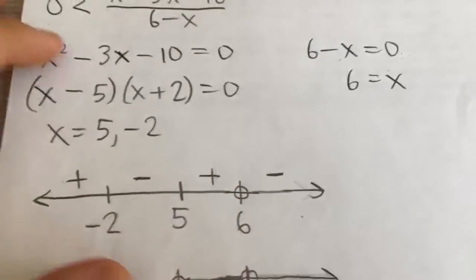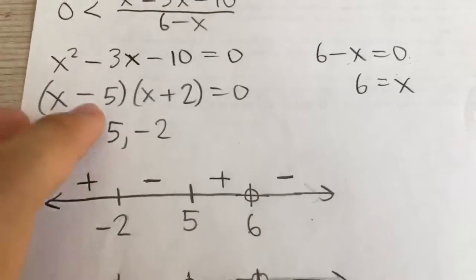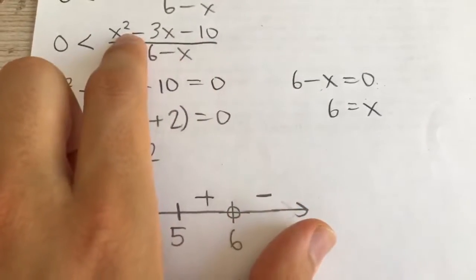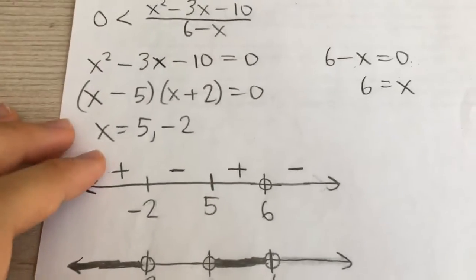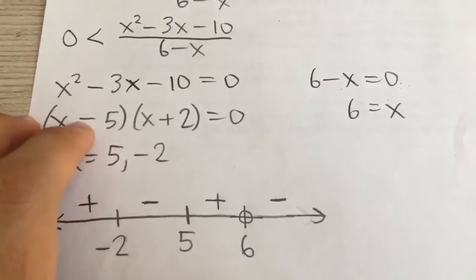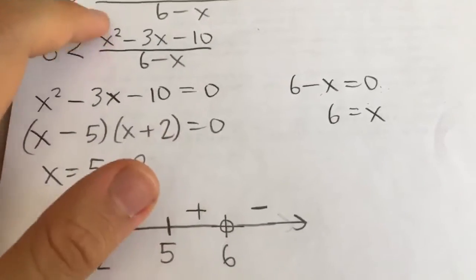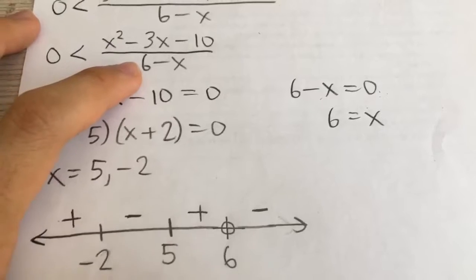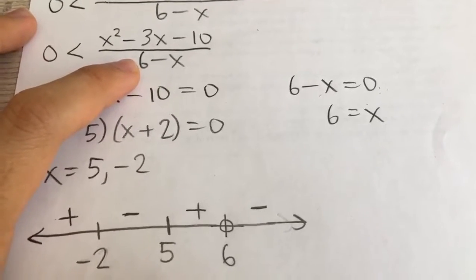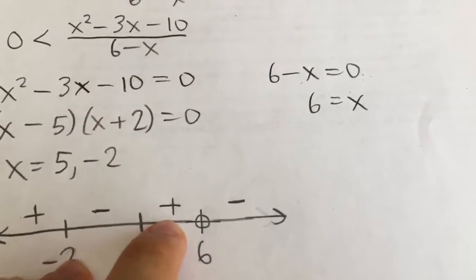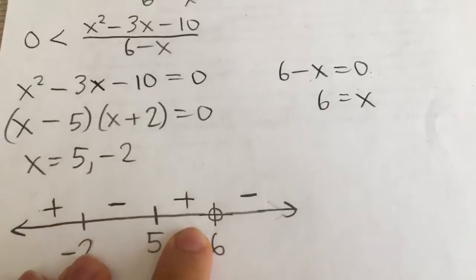In between 5 and 6, that's, say, 5.5. Again, I'm going to use these factors rather than plugging it into this quadratic and then having to square it and all of that. 5.5 minus 5, that's positive. 5.5 plus 2, that's also positive. So the numerator is positive. Of the denominator, 6 minus 5.5, that's also positive. So it's positive in this region.